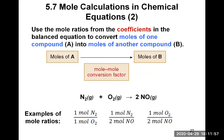The roadmap would look like this: you start with moles of A and end up with moles of B, using a mole-to-mole conversion factor. Keeping the example of N2 reacting with O2 giving two molecules of NO, there are multiple conversion factors that can be written from the coefficients of this balanced chemical equation. We don't see the ones in front of N2 and O2, but they are implied — coefficients of one are not written, but it's understood as one mole of N2 reacting with one mole of O2. So you could use the ratio of one mole of N2 over one mole of O2 as a conversion factor to convert moles of O2 into moles of N2.